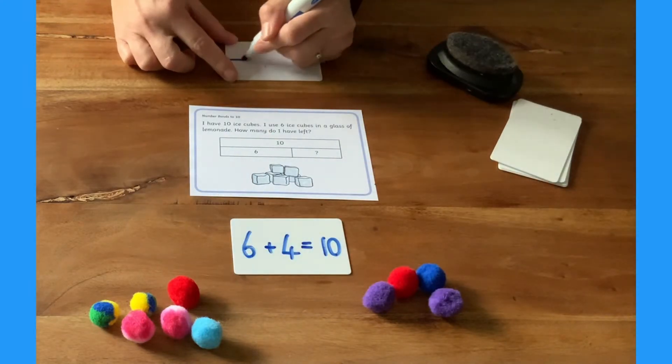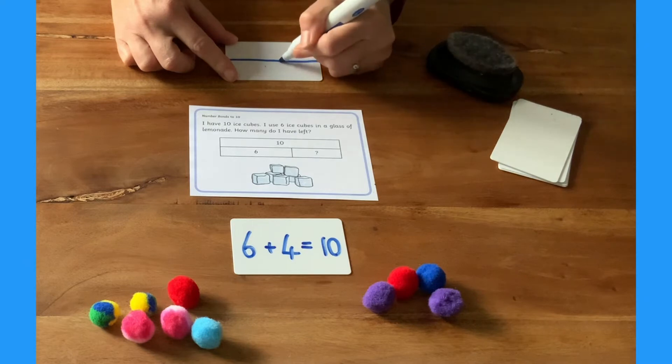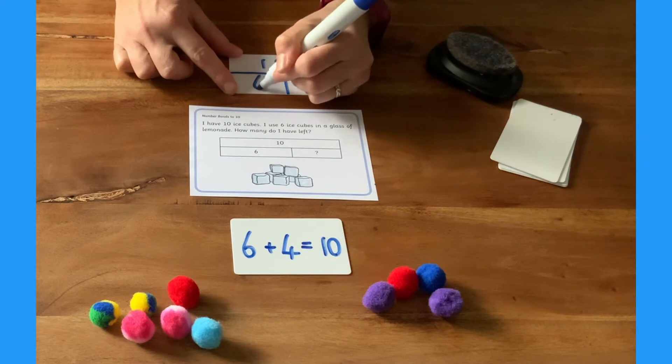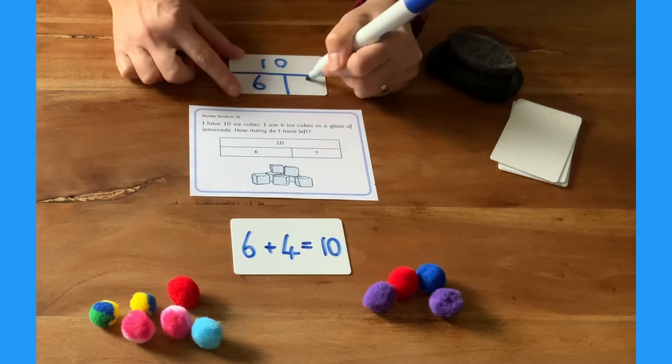They could represent it on a bar model. 10 is the whole amount of ice cubes and that goes on the top. This is split into 6 and 4 and these numbers go on the bottom.